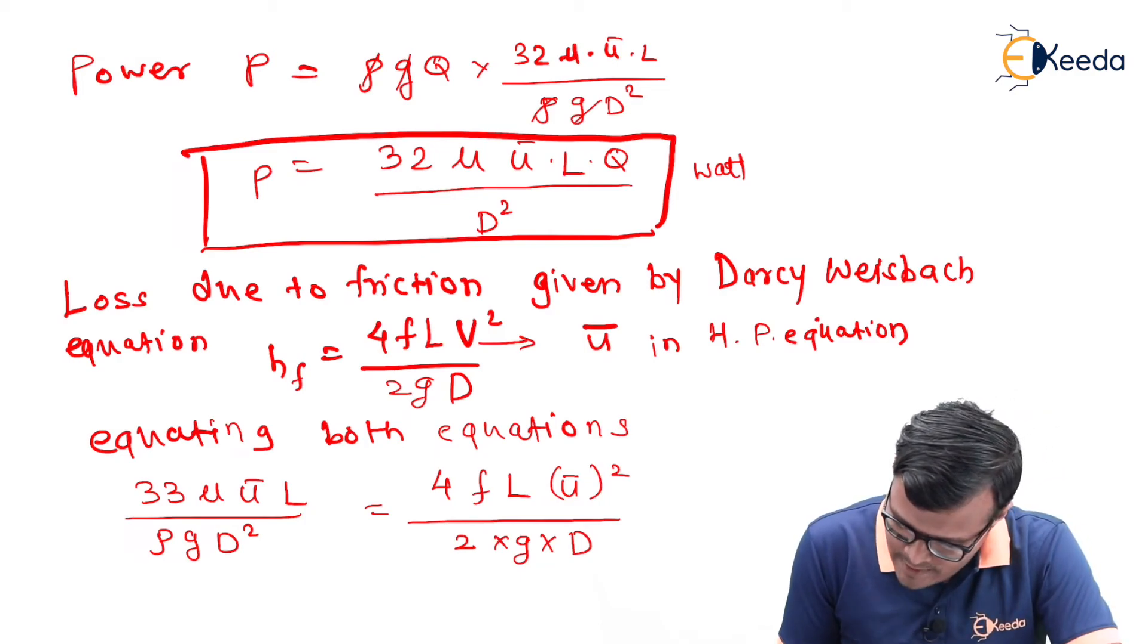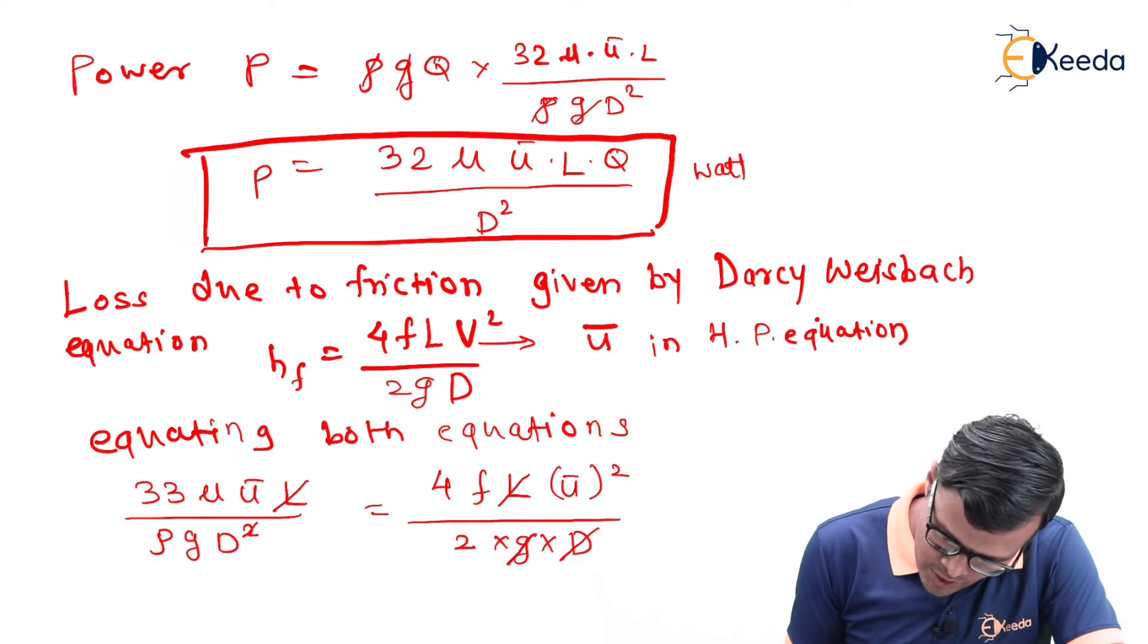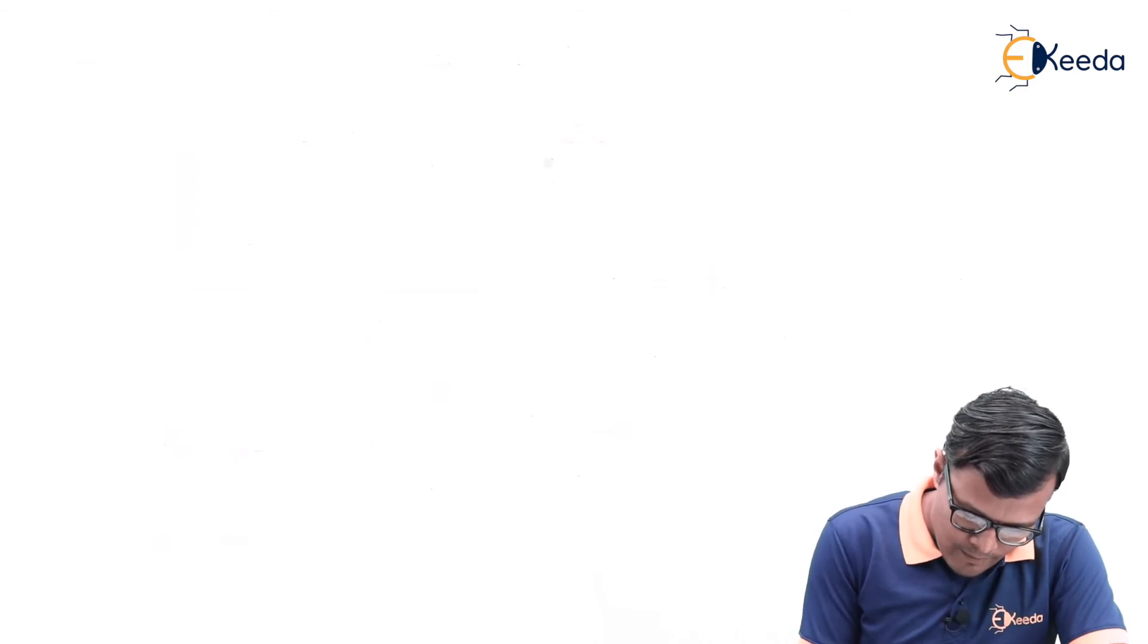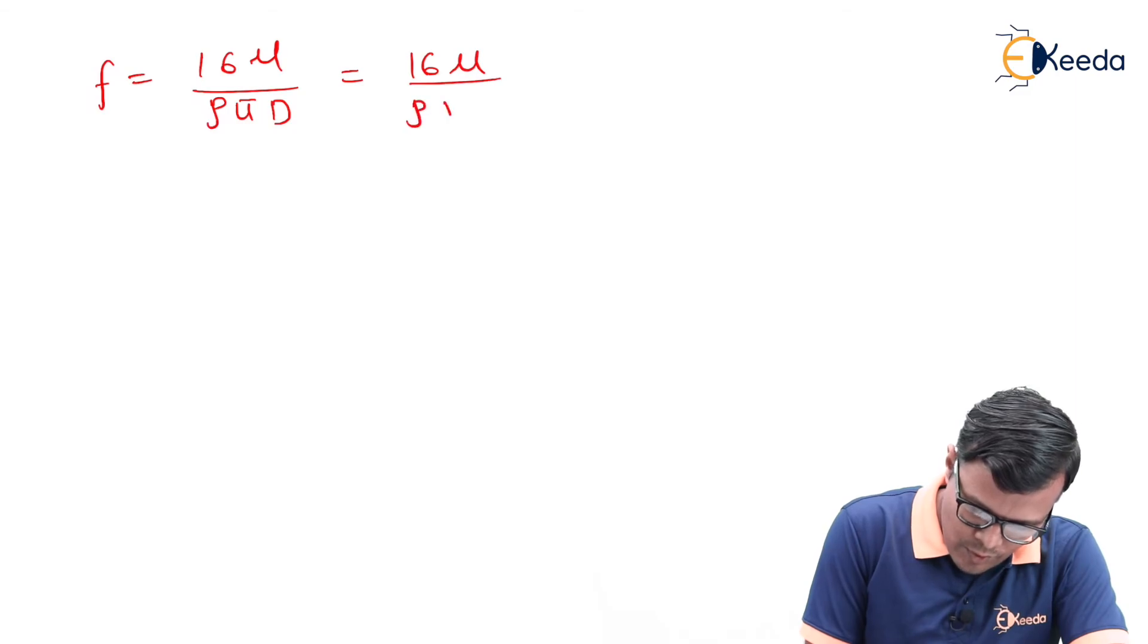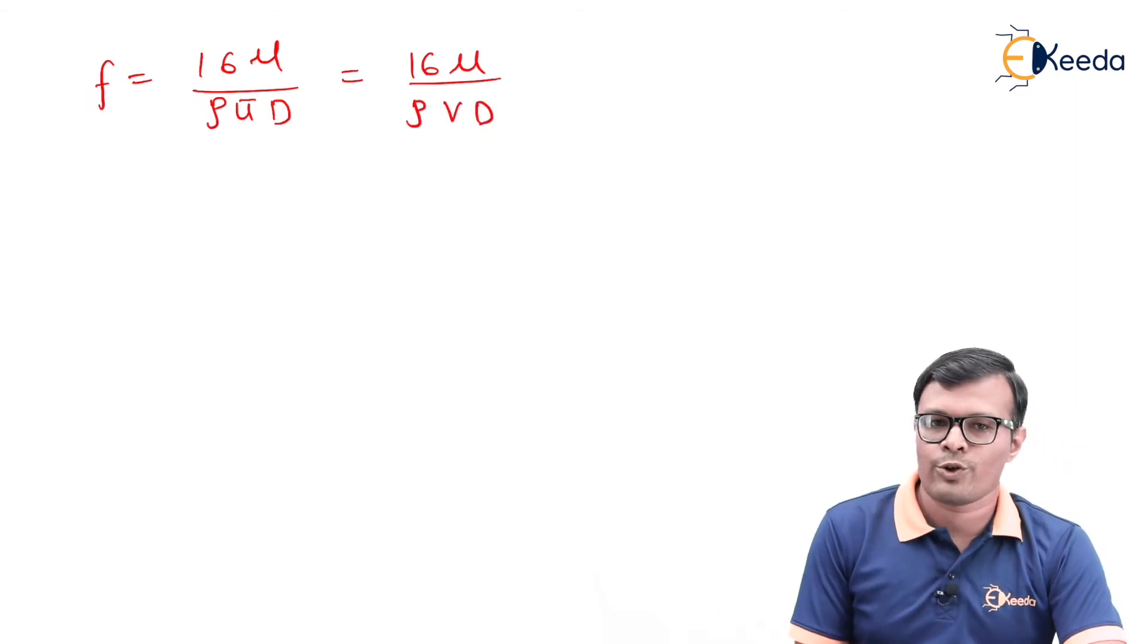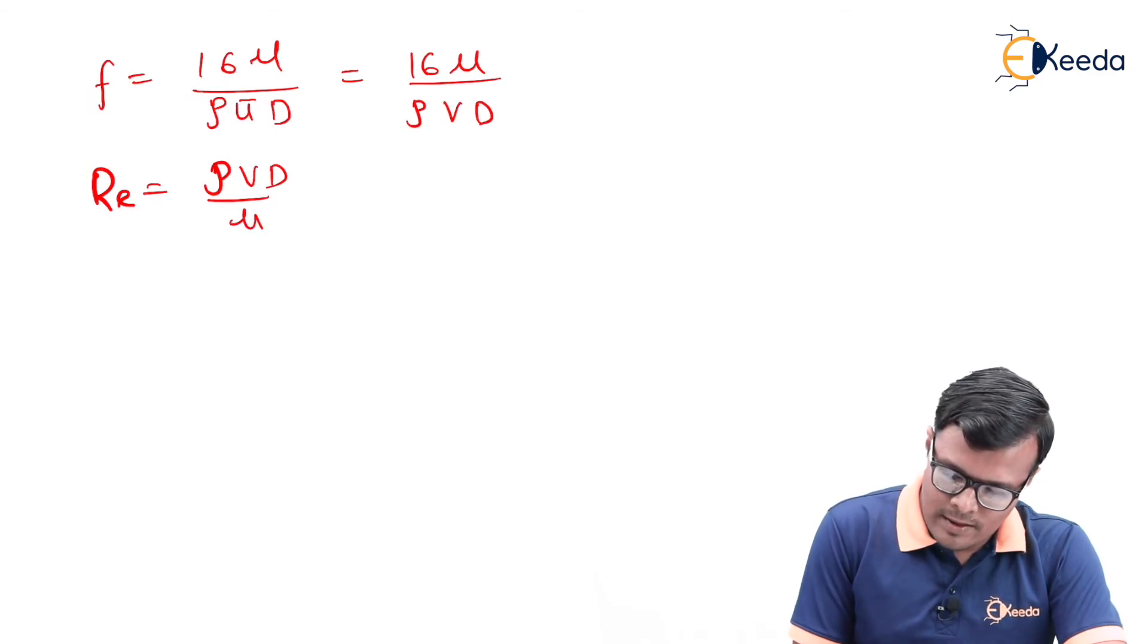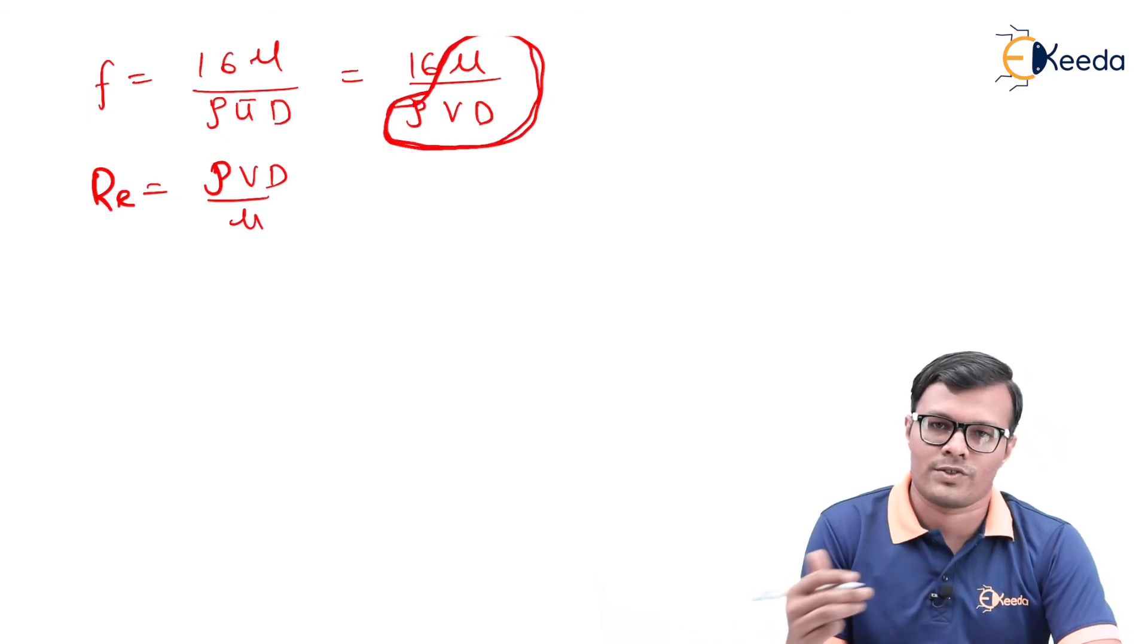This one of the term u bar and this u will also get cancelled out. Our equation will become f equal to 16 mu upon rho u bar into d, or 16 mu upon rho v d. But we know the basic formula for Re is equal to rho v d upon mu. This term can be seen in this formula over here; I have highlighted this is nothing but 1 upon Reynolds number formula.